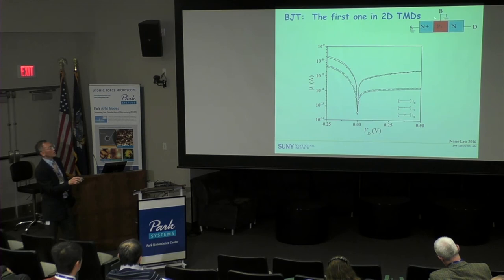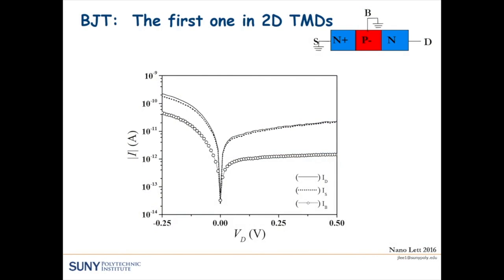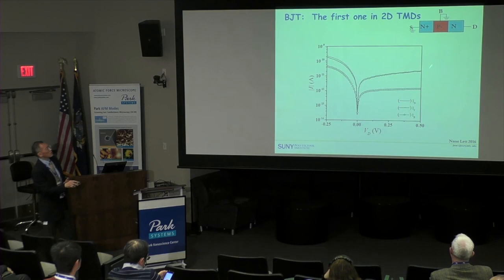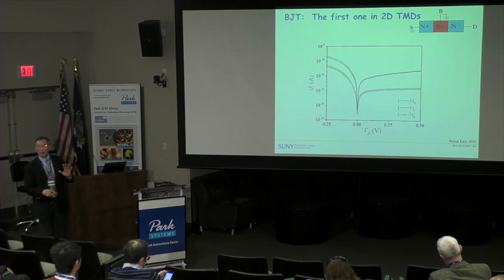Looking at what I believe is the first BJT in a 2D material system: grounding the source and base gives diode IV characteristics, and we look at the current at all three terminals. When VD is positive, we're reverse-biasing the second junction and see only leakage current. Already, most current flows between drain and source with very little through the base — an early indication of large gain in this device.